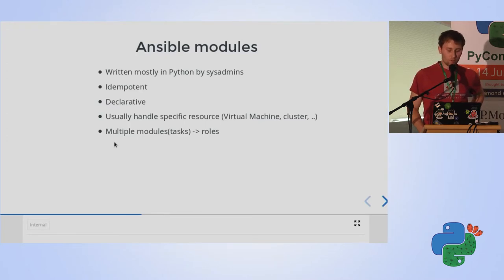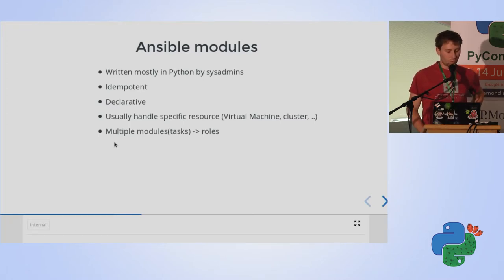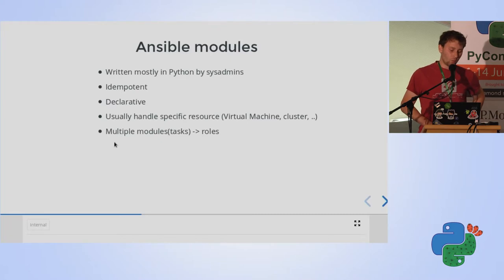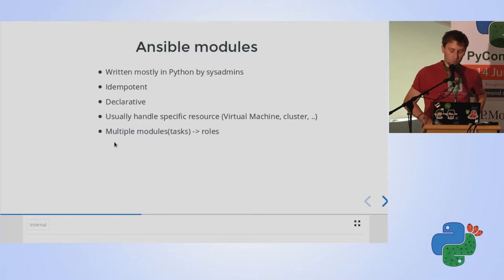What I'll be discussing is implementing modules for REST API resources — in the case of the oVirt project, those are virtual machines, clusters, VM disks, and more. You should handle each specific resource of your REST API in a dedicated Ansible module. For more complex things like a virtual machine with its disk and snapshots, you should split it into multiple modules and glue them together into roles that handle complex tasks.